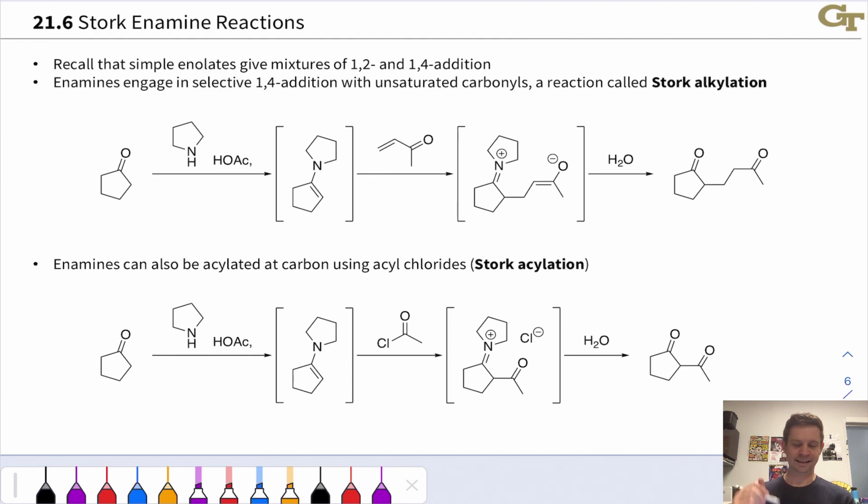Simple enolates, unstabilized enolates, give mixtures of 1,2 and 1,4 addition with alpha-beta unsaturated carbonyl compounds, a mixture of addition to the beta carbon and the carbonyl carbon. But enamines, because they are softer and less reactive than enolates, engage in selective conjugate addition with unsaturated carbonyls. And this is called Stork alkylation in honor of the discoverer of the reaction, Gilbert Stork.